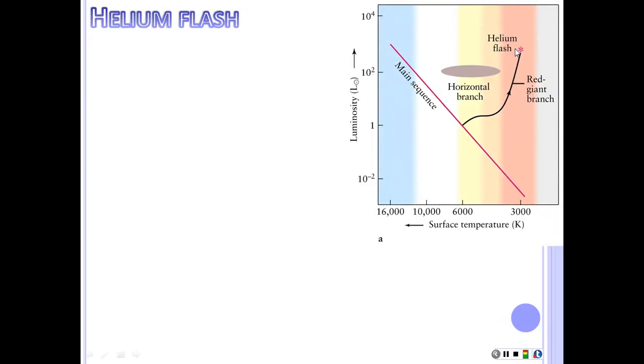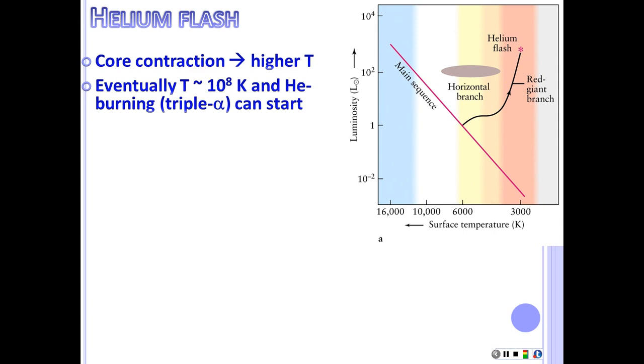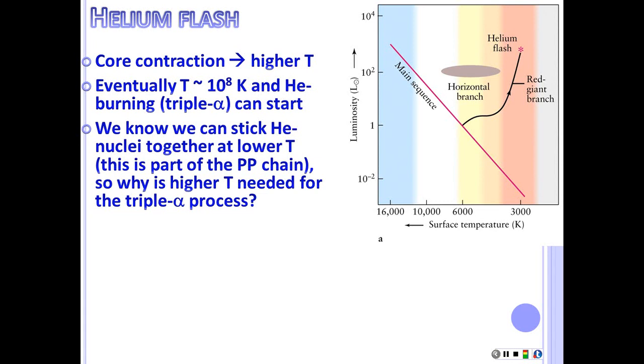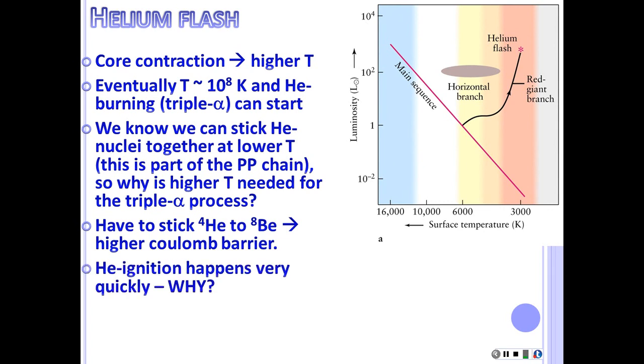Okay, but then eventually we get this helium flash that's appeared on a few of these diagrams. And so we need to talk about what that is. So remember, the core is contracting. It's getting hotter and hotter because you're converting gravitational potential energy to kinetic energy. Eventually you get to about 100 million Kelvin, and at that point you can start fusing helium. And basically it does it by what's called the triple alpha. A helium nucleus is basically an alpha particle, and so if you take three of them and you stick them together, you get carbon. We know we can stick heliums together because part of the PP chains, so why is it that we need higher temperatures to make the triple alpha process work? Well, basically in this case, you're sticking two heliums together to get a beryllium, and then you have to stick another helium on before that beryllium can fall apart because it's unstable. And so you have to overcome a higher Coulomb barrier and you have to do it fast.